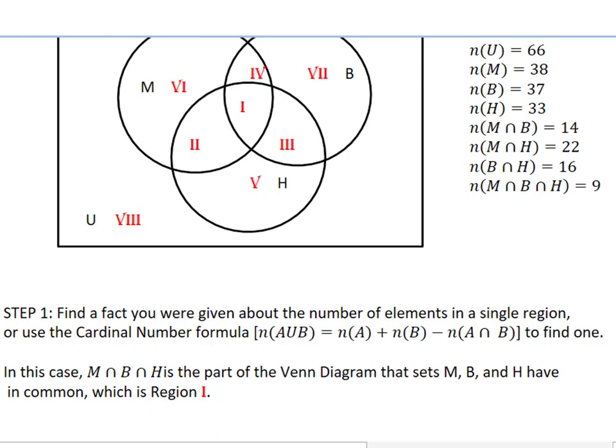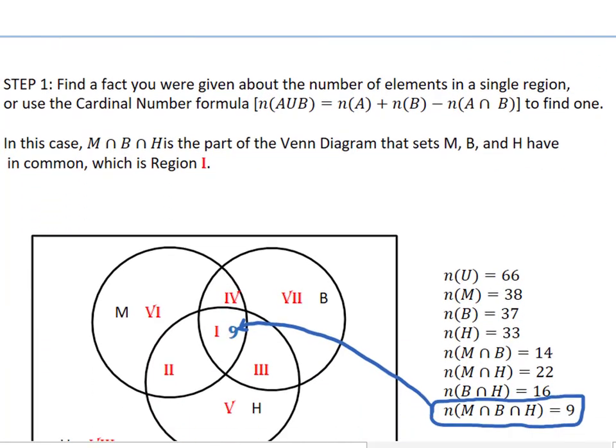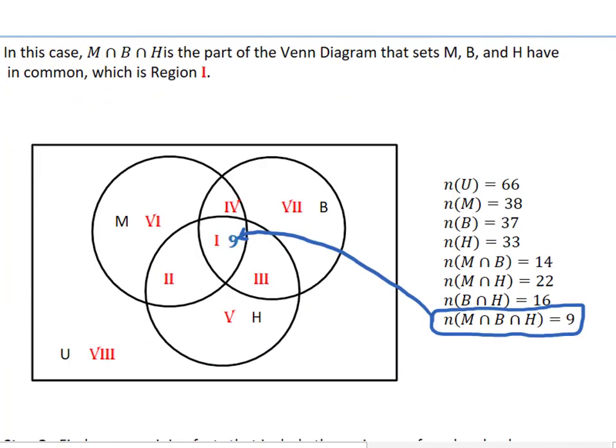All right, so let's look at what happens when we label region 1. Region 1, again, is M intersect B intersect H, has nine elements in it.